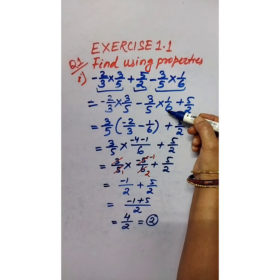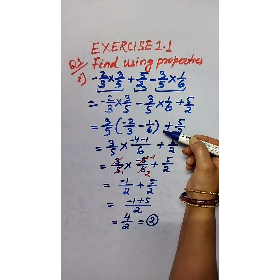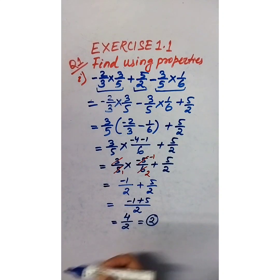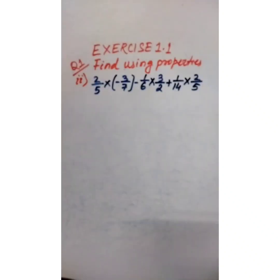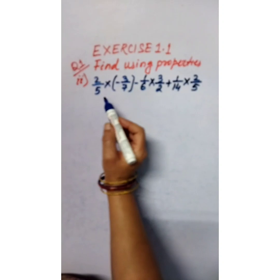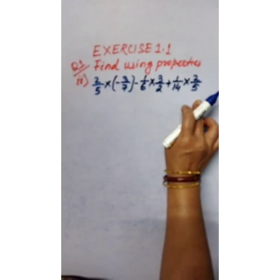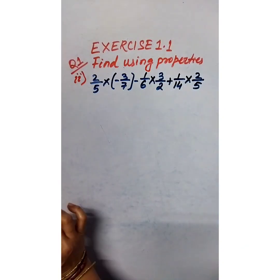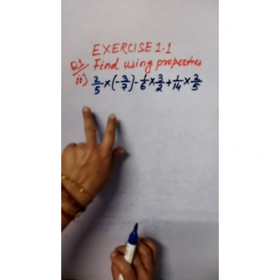So by using properties — associativity and distributive property — we have solved this and got the solution 2. Now in part 2, the same process and steps apply. How many terms are there?